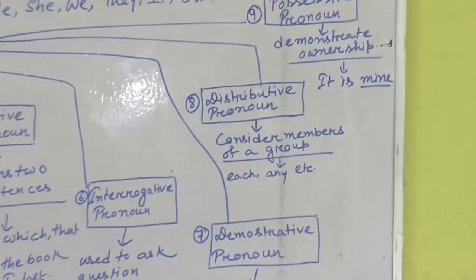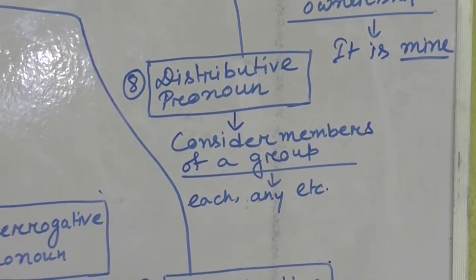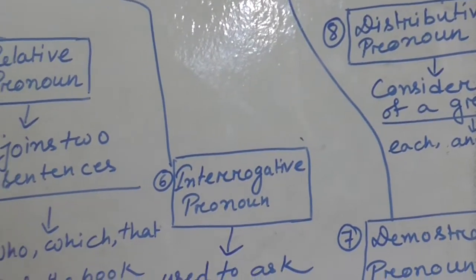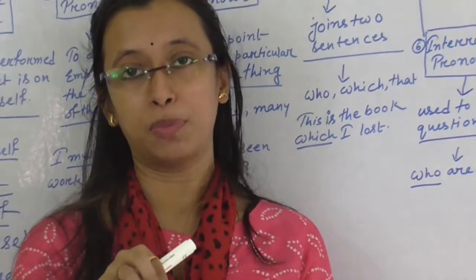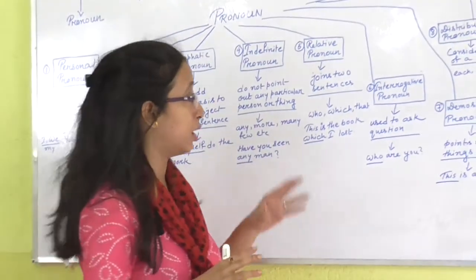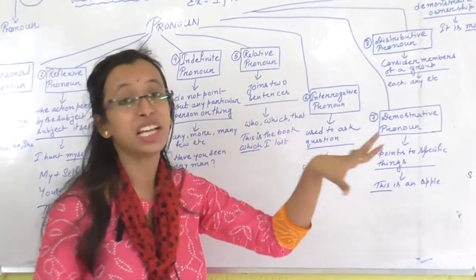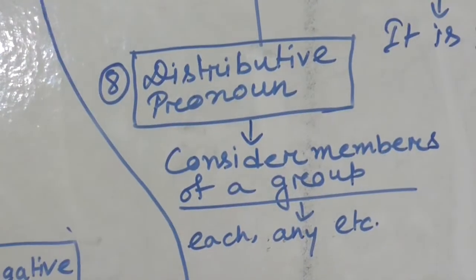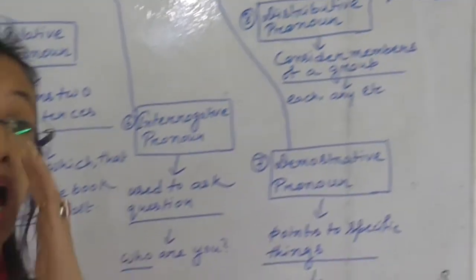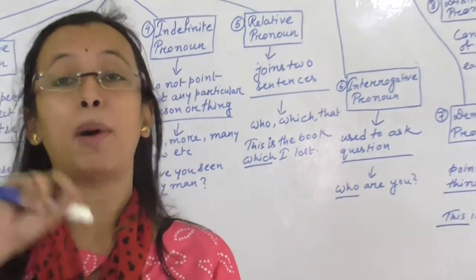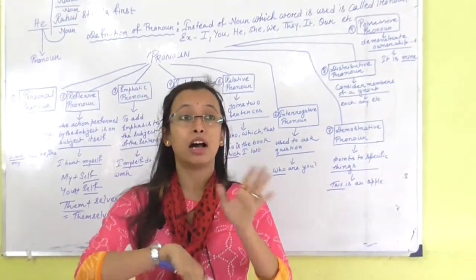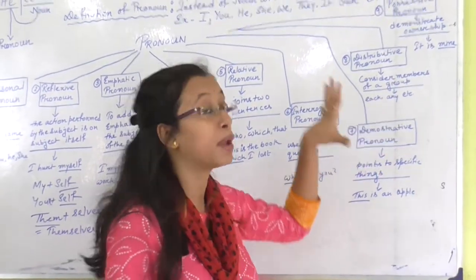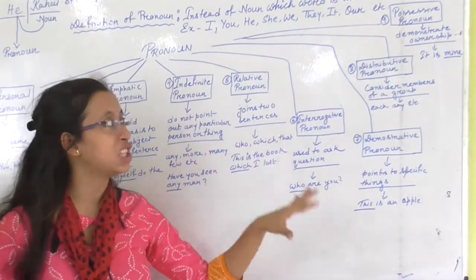Number eight: distributive pronoun. It is a pronoun which considers the members of a group. Examples are: each, any, etc. Like 'Each of the brothers is very good' — it means everyone. I am not particularly talking about one brother, but about all the brothers. So it considers members of a group — this is distributive pronoun.